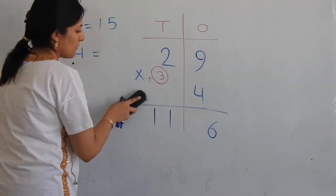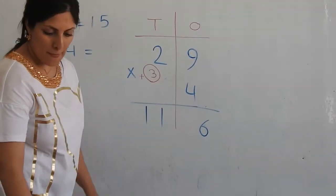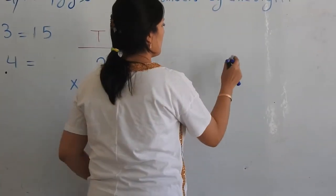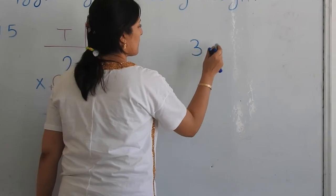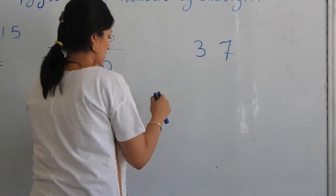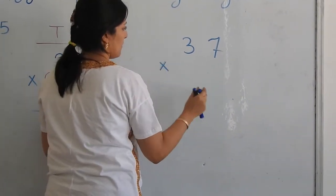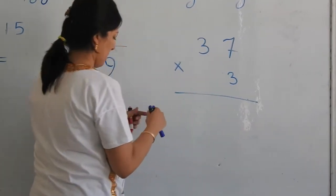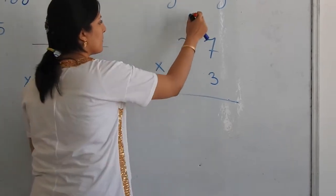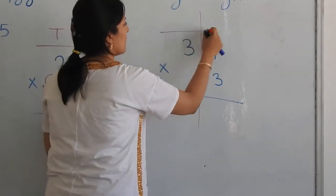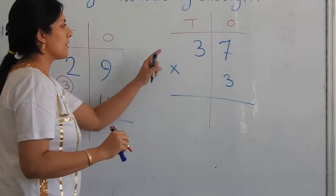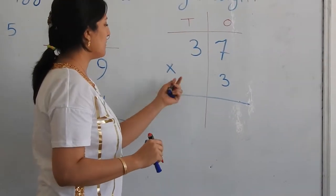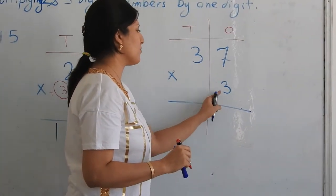Let's do another example. For example, 37 times 3. Again we have ones and tens house. 37, three tens and seven ones, and we multiply it by a digit by a 3.